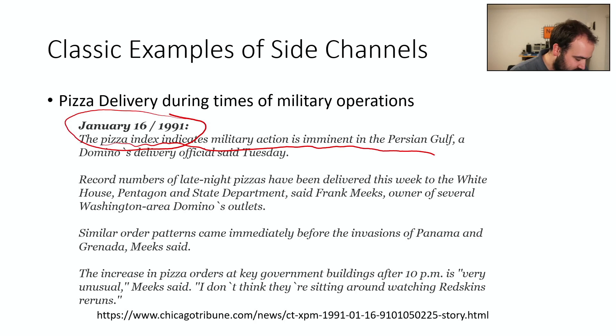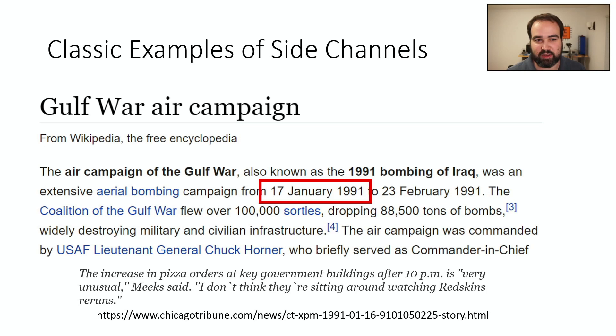And there was this pizza delivery guy saying record number of late night pizzas has been delivered. And they suspect something is going on. And so on January 16th, 1991, basically the next day, the Gulf War air campaign started here. So this was, I think, Operation Desert Storm is what this was known as. But you basically had this campaign that actually did start right then. So side channels are always available to leak information. There's tons and tons of examples of that where there's some unintended leakage of information.